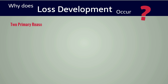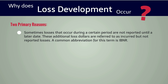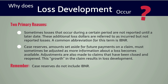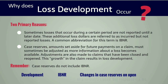We are often asked, why does loss development occur? There are two primary reasons. First, sometimes losses that occur during a certain period are not reported until a later date. These additional loss dollars are referred to as incurred but not reported losses, commonly abbreviated as IBNR. Case reserves — amounts set aside for future payments on a claim — must sometimes be adjusted as more information about a loss becomes available. Adjustments are also made to claims that have been closed and reopened. This growth in the claim results in loss development. An important thing to remember is that case reserves do not include IBNR.